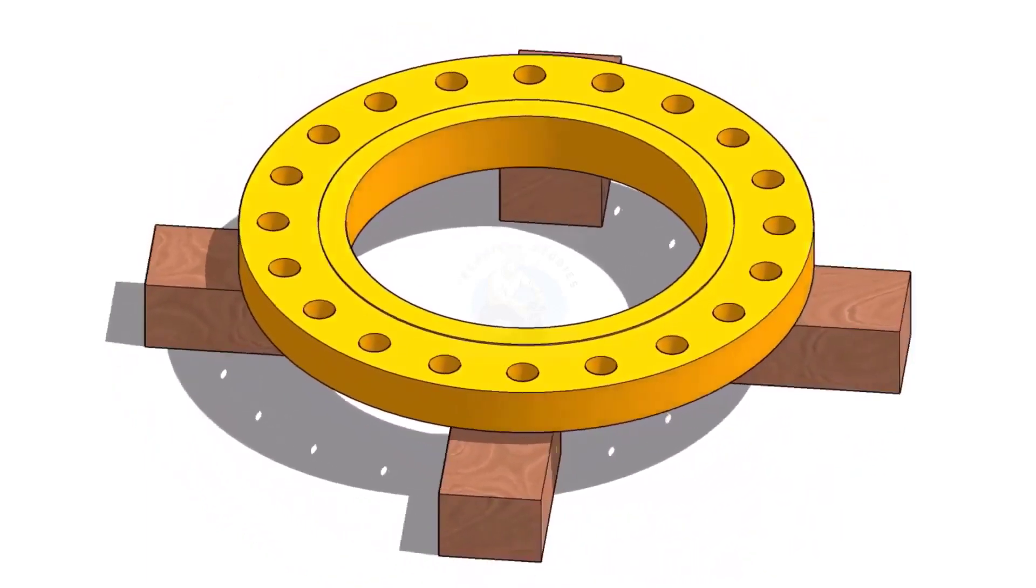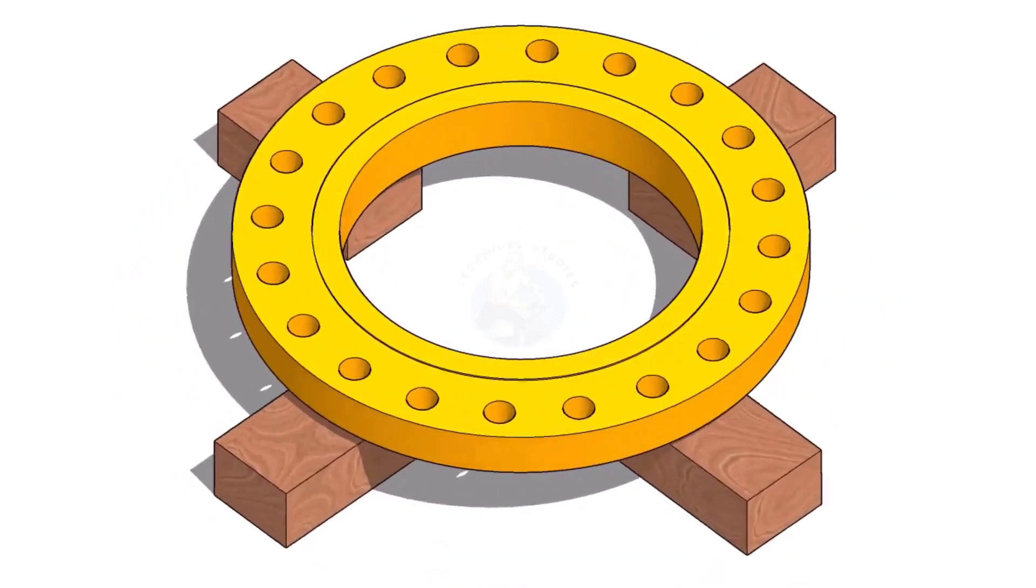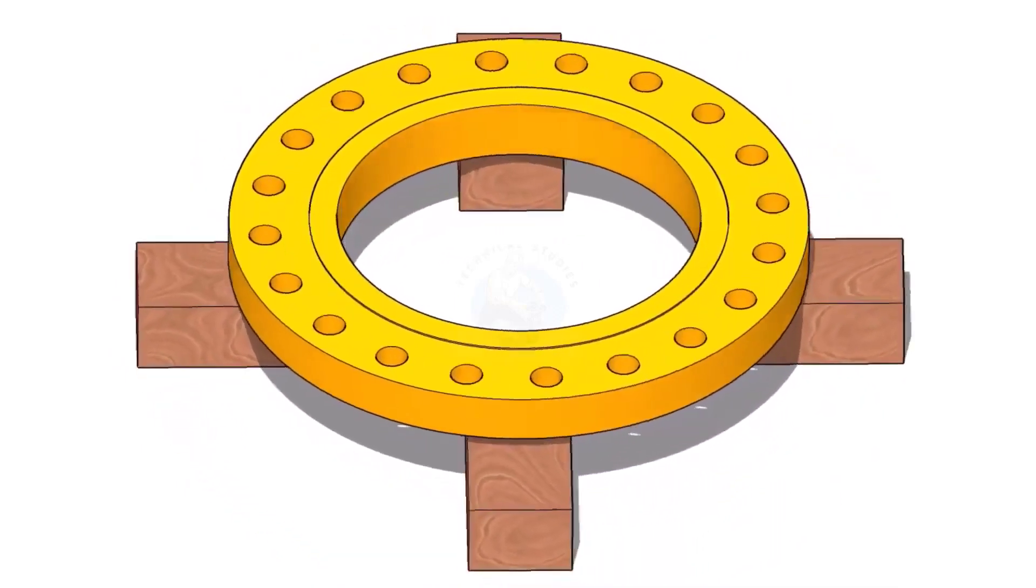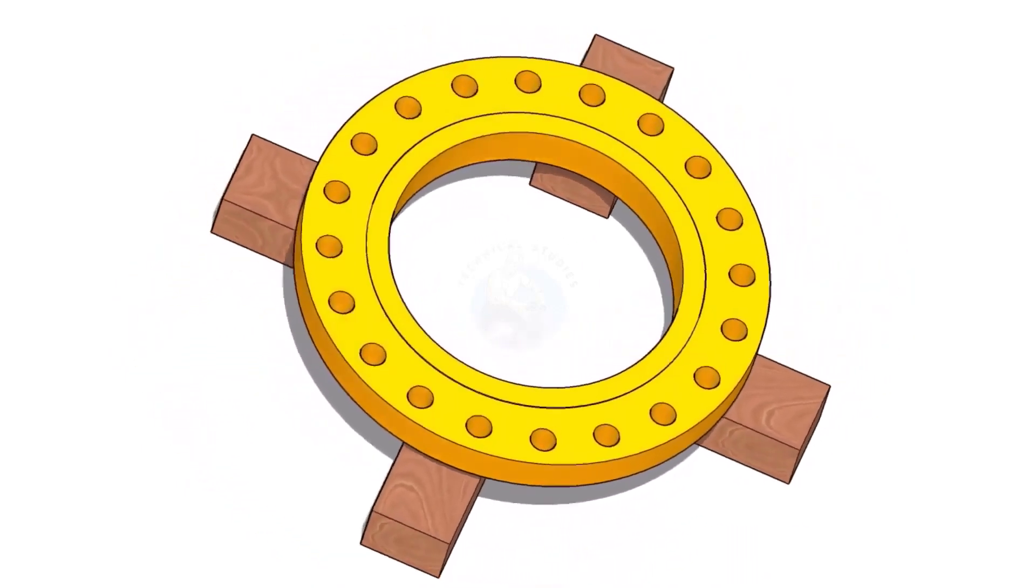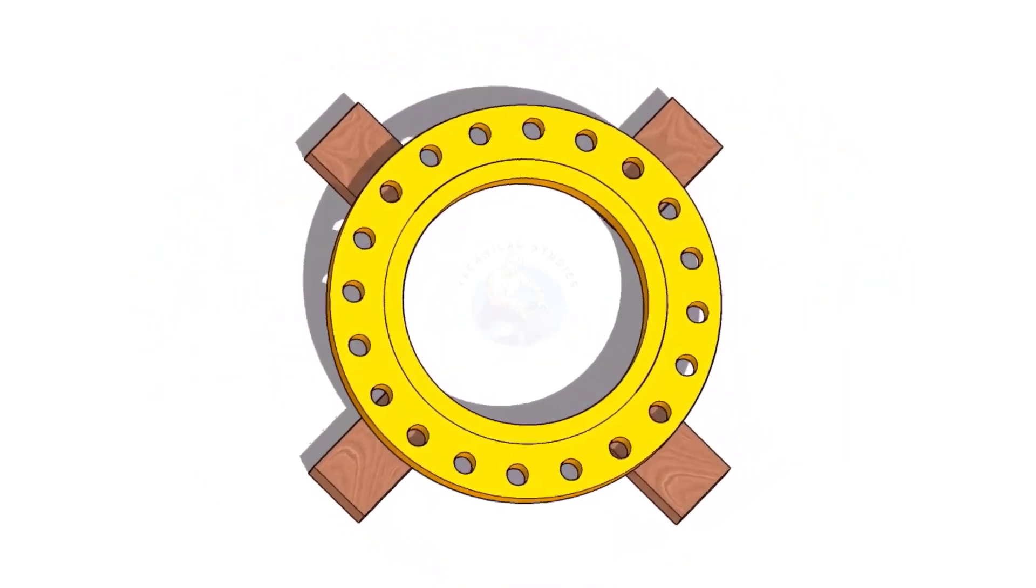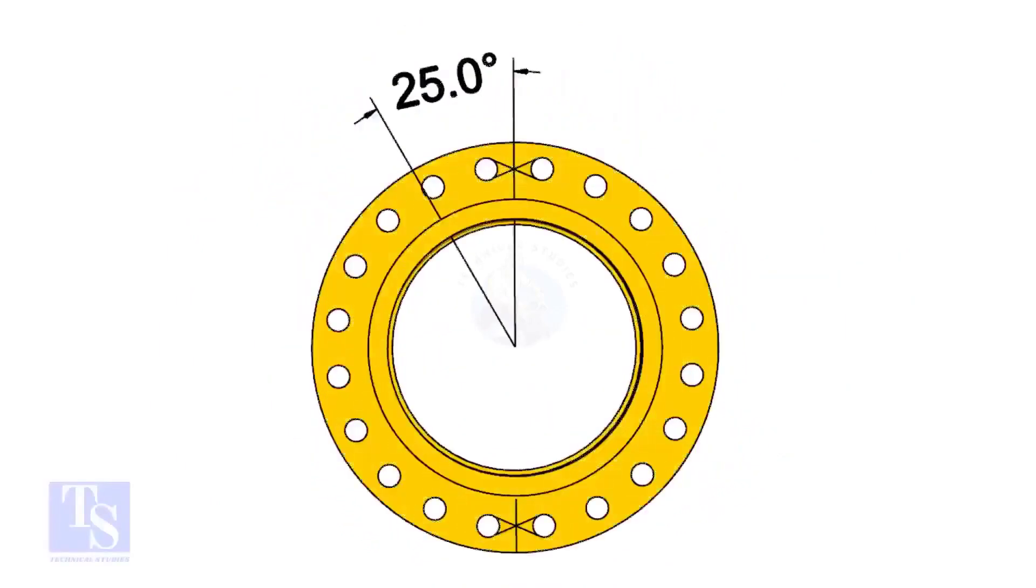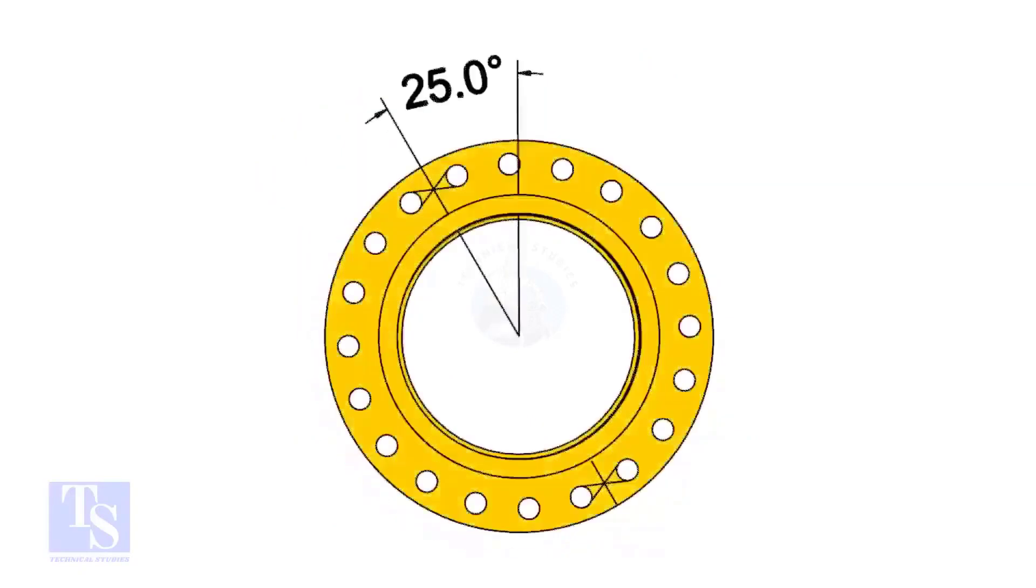I choose a slip-on flange for the example, but the calculation and the procedure are same for all flanges. The pipe and the flange size is 16 inch, and the flange will rotate 25 degree anticlockwise. Hope you all know the difference between clockwise and anticlockwise rotation.